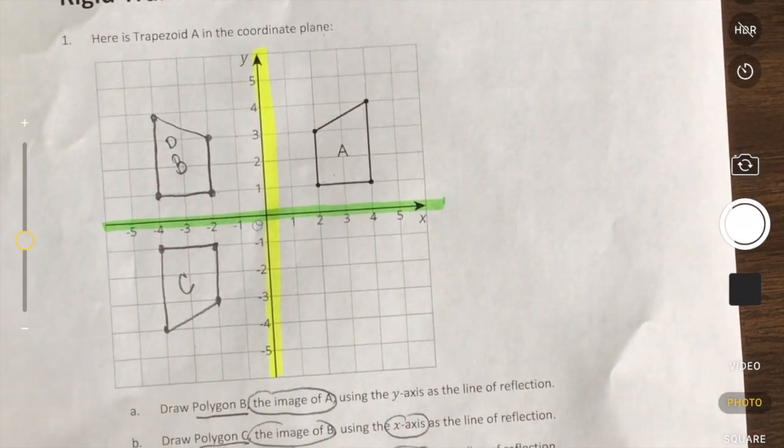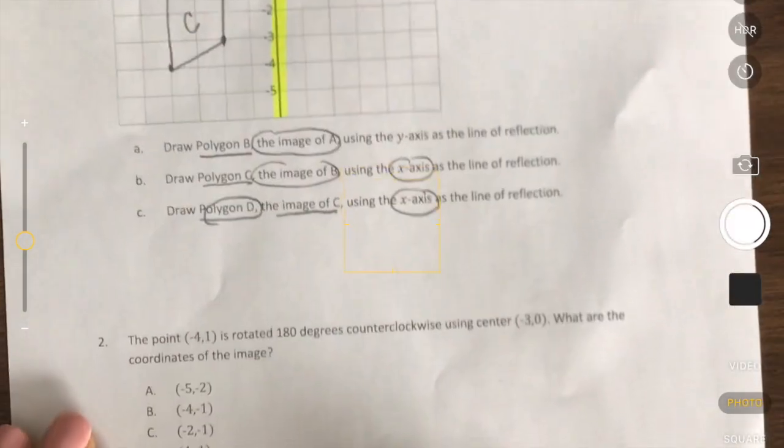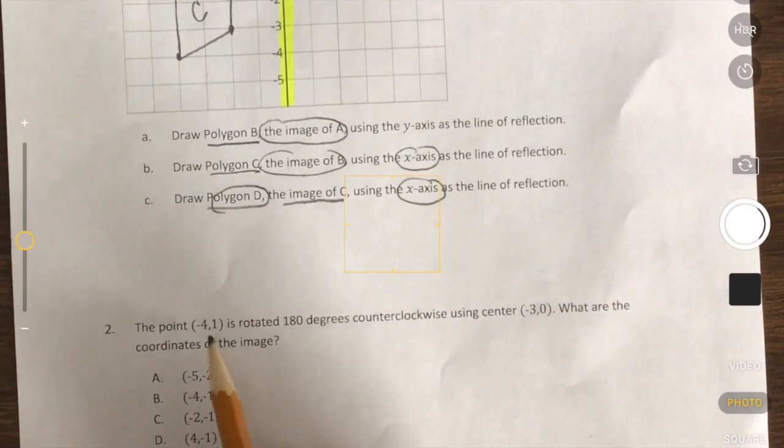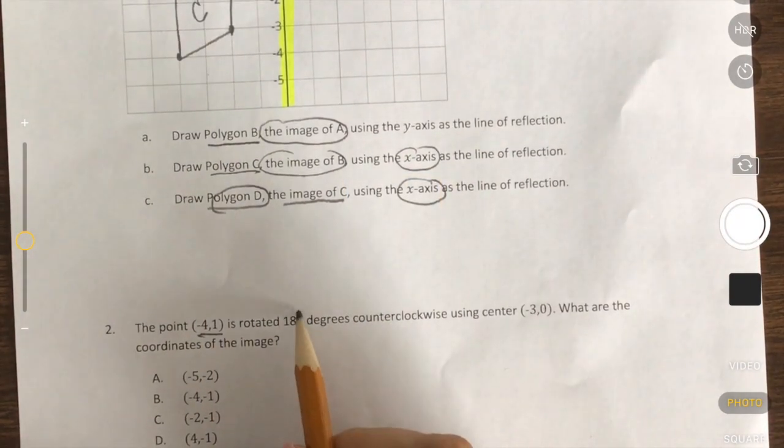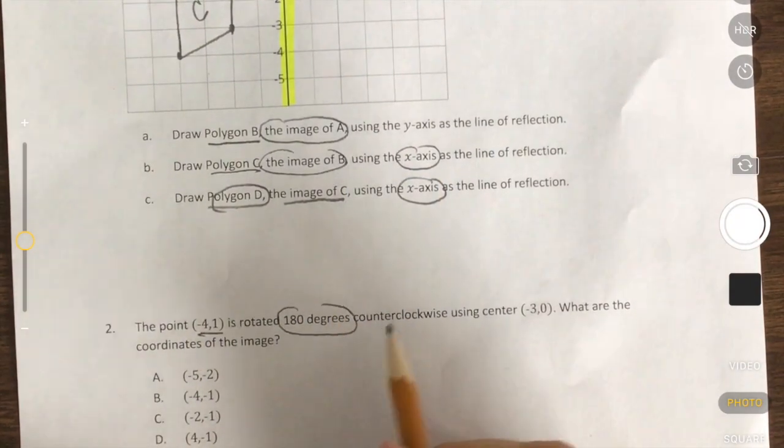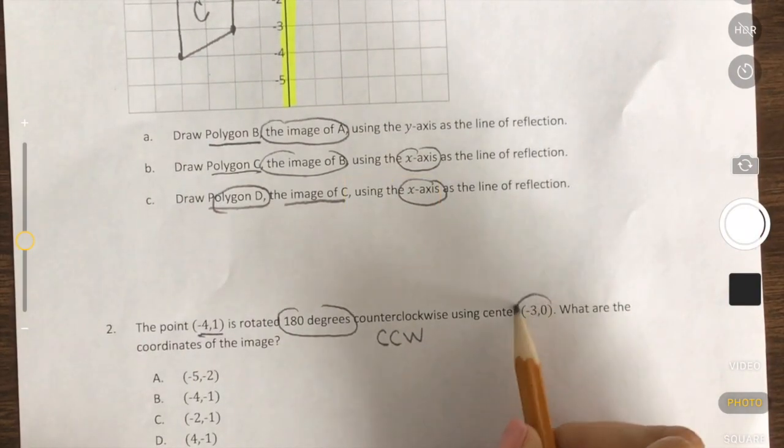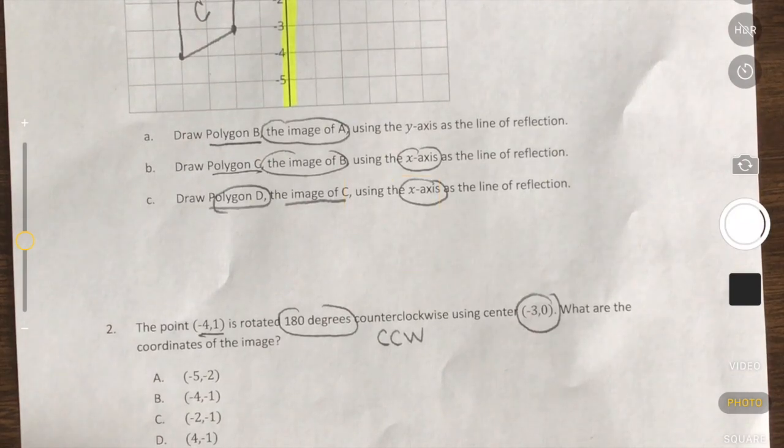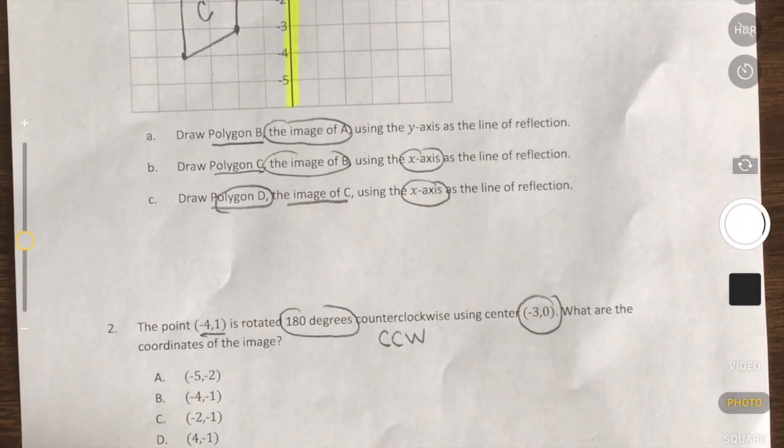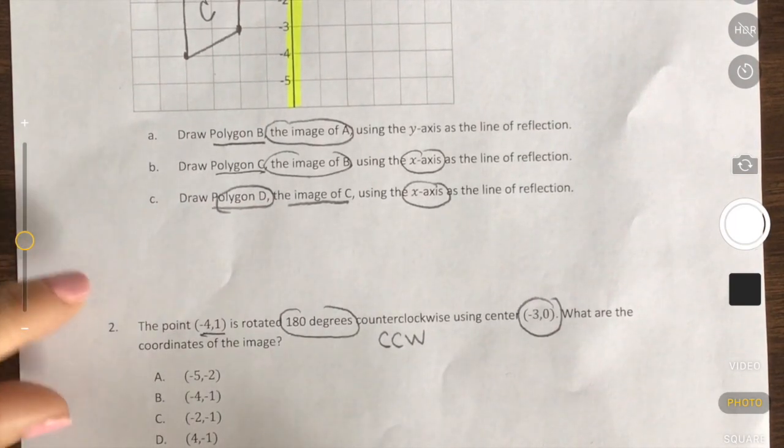Now the number two here, the point negative 4, 1 is rotated 180 degrees counterclockwise using the center negative 3, 0. So we're not using the center of 0, 0 right now. We're using negative 3, 0. What are the coordinates of the image?